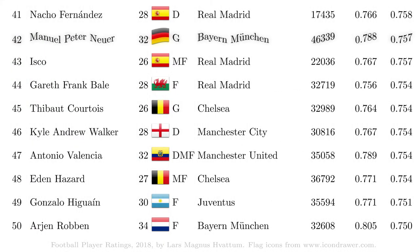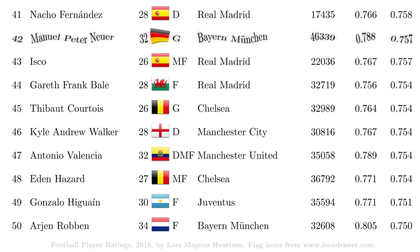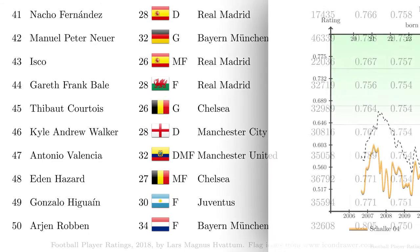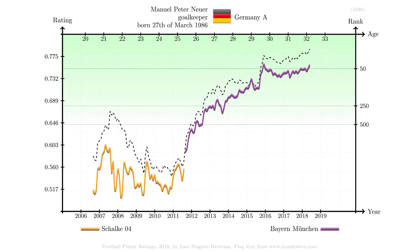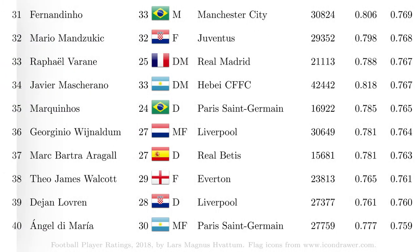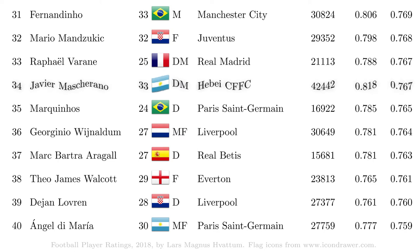Manuel Neuer, ranked 42, is the highest rated goalkeeper according to our current model. At rank 34 we find the highest rated player currently appearing in the Chinese top division, Javier Mascherano.